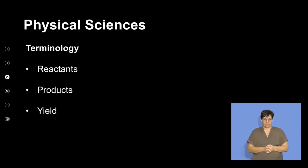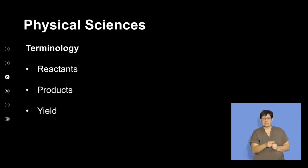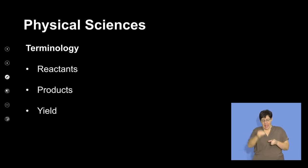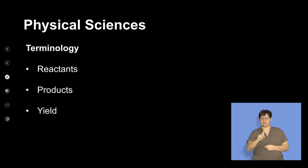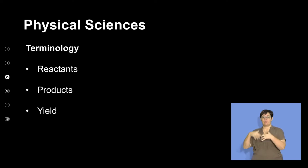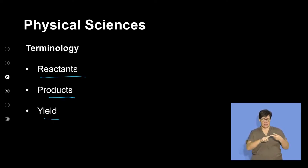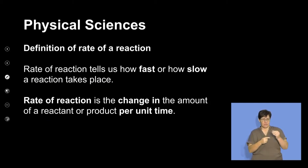The terminology important for this lesson includes words like reactant — the substances we need to start a chemical reaction — words like product — the substances that are formed — and then the yield, which is how much of the substances are converted into a new substance. We will look at reactants, products, and yield, and these terms will be used a lot.